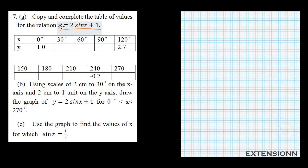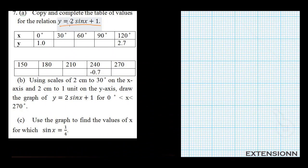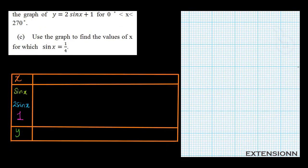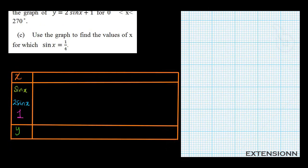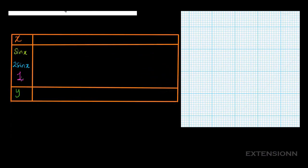We have y equals 2 sin x plus 1. To draw the table, the first row is sin x. Then you multiply 2 by sin x to get 2 sin x. Then since we have plus 1, you add 1. So to get y, you take the value of 2 sin x and add it to 1. Whatever you get will be the value of y. It's as simple as that.